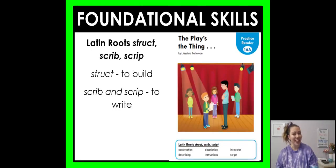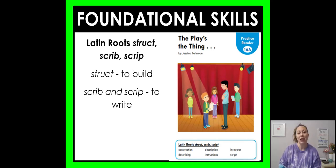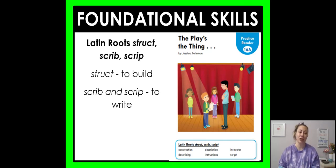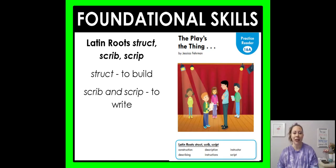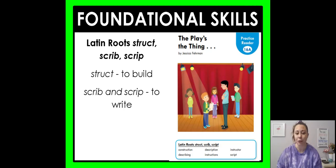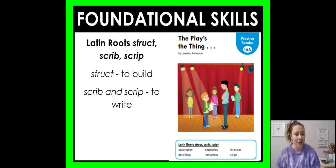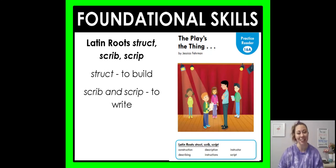For foundational skills today, you have a fluency read focusing on our Latin roots: struct, scrib, and script. Remember that struct means to build and scrib and script mean to write. Your fluency read is called The Play is the Thing, and the words that have those roots are construction, describing, description, instructions, instructor, and script. Take your time and have fun with that read.